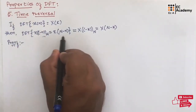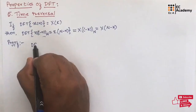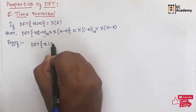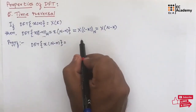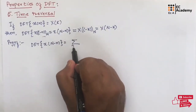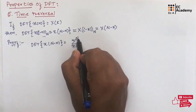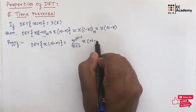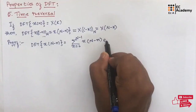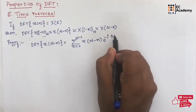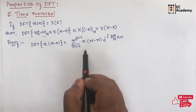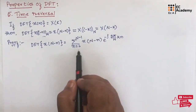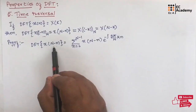We will take DFT of x(N-n), which will be equal to the summation from n=0 to N-1 of x(N-n) into e to the power of minus j 2π/N into kn. This is similar to the formula of DFT, except that instead of x(n), we have written x(N-n).